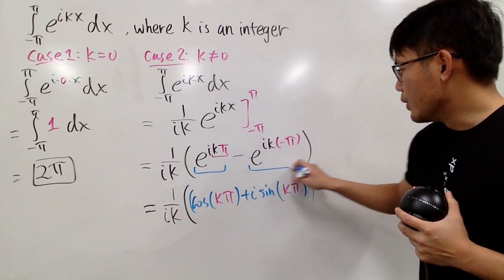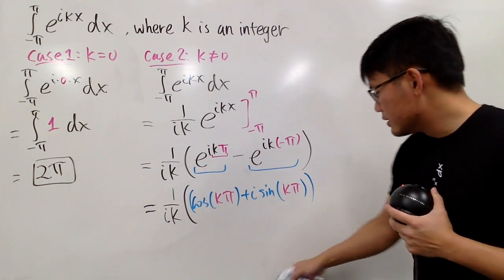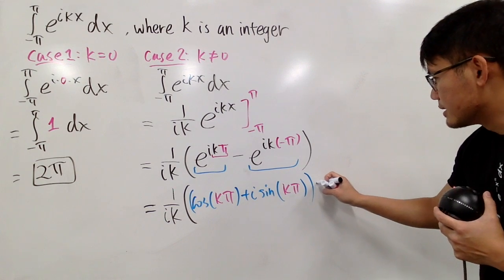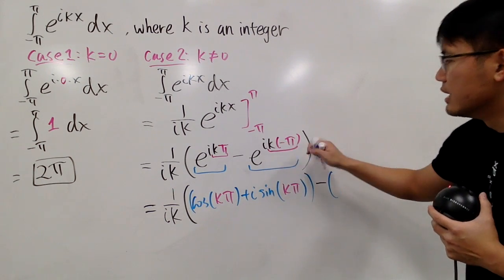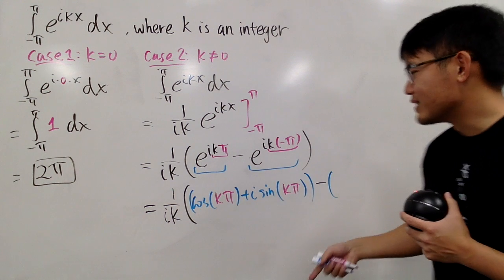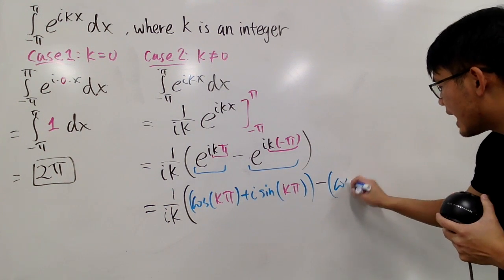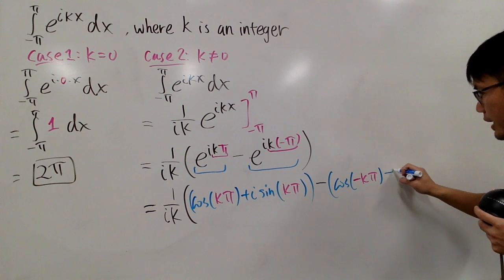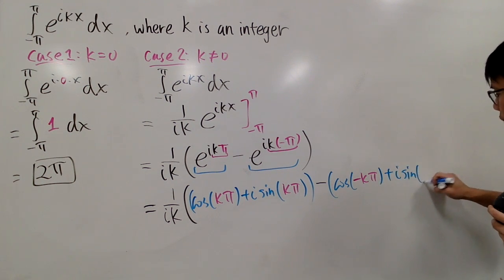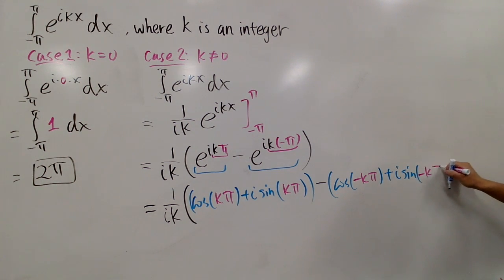Well, we also have to subtract this part. So, this is my subtraction. And for this part, the angle is negative k pi. So, I will just put cosine of negative k pi here, and then we add i sine of negative k pi.